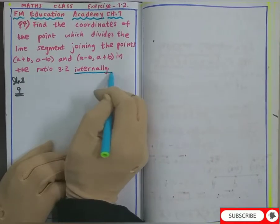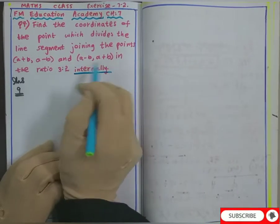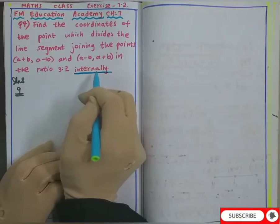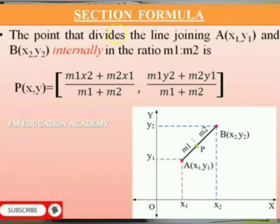The word internally is just mentioned to clarify, but you have to use the same formula which is section formula. The section formula is: m1x2 + m2x1 by m1 + m2 comma m1y2 + m2y1 by m1 + m2.